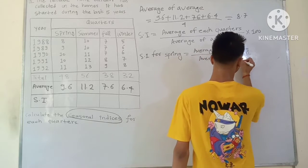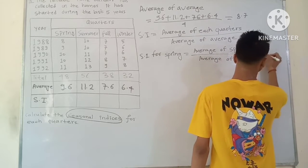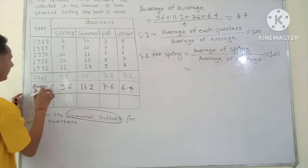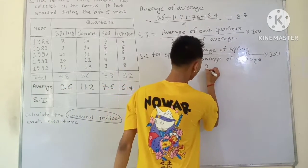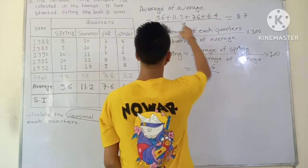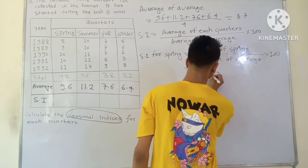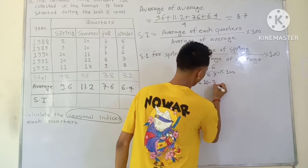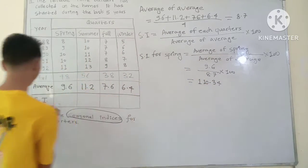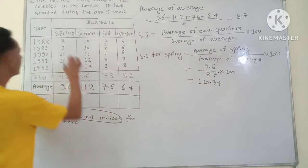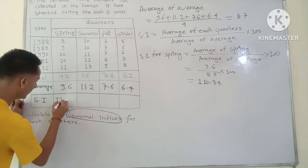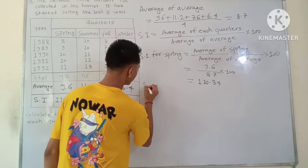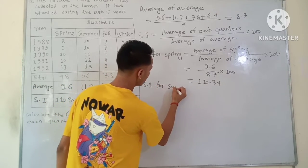Now applying the formula: Seasonal Index for Spring equals Average of Spring divided by Average of Average into 100. Spring average is 9.6, divided by 8.7, into 100 — which gives 110.34. So the Seasonal Index for Spring is 110.34.